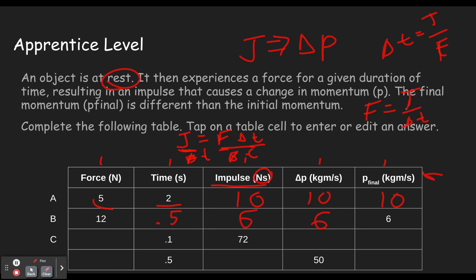We plug in the impulse of 72. We divide by 0.1. That gives us 720 newtons of force. Well, if the impulse was 72, the change in momentum is 72, and the final momentum is 72.